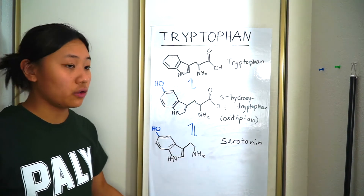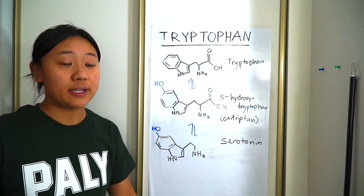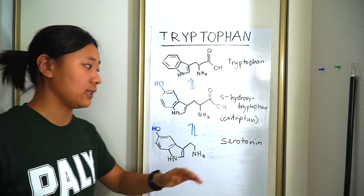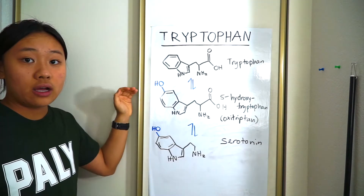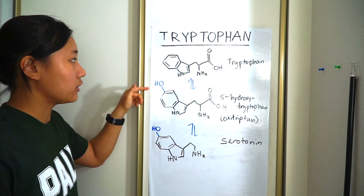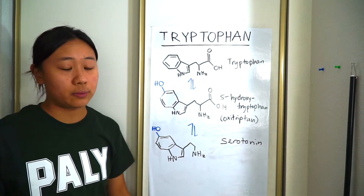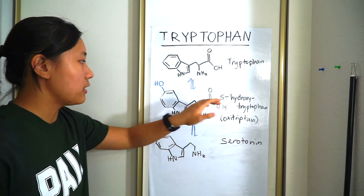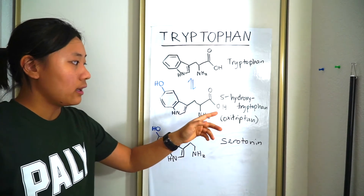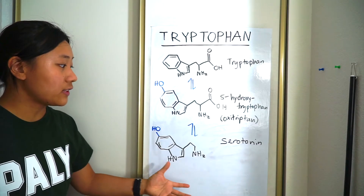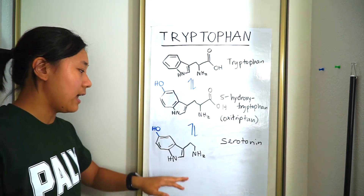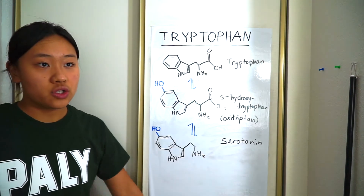This is how tryptophan becomes serotonin, which is a neurotransmitter that makes you happy. And that's why tryptophan is used as an antidepressant sometimes because it leads to serotonin. Same with oxytryptin — an enzyme adds a hydroxyl group right here to tryptophan and it becomes 5-hydroxytryptophan, which means the hydroxyl group is on the fifth carbon. Finally, an enzyme removes the carboxyl group from 5-hydroxytryptophan and it becomes serotonin, which makes you happy.